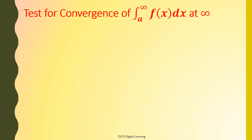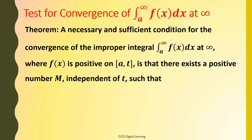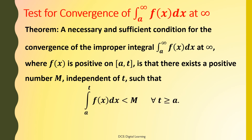Test for Convergence of integral of f(x) dx from a to infinity at infinity. Theorem: A necessary and sufficient condition for the convergence of the improper integral of f(x) dx from a to infinity, where f(x) is positive on [a, ∞), is that there exists a positive number M independent of t such that the integral of f(x) dx from a to t is less than M for all t ≥ a.